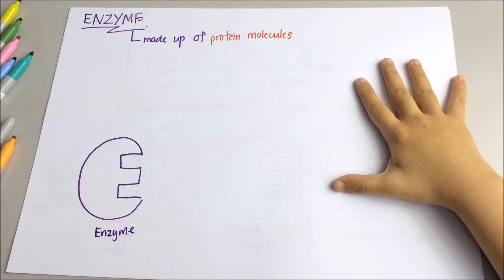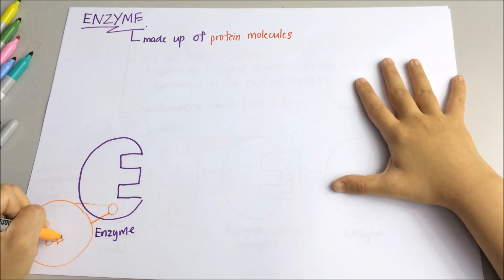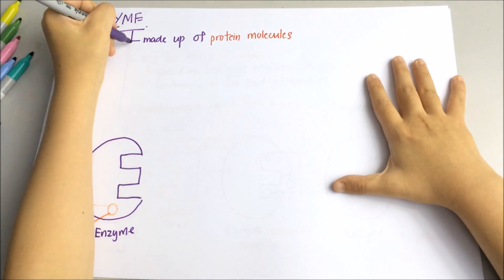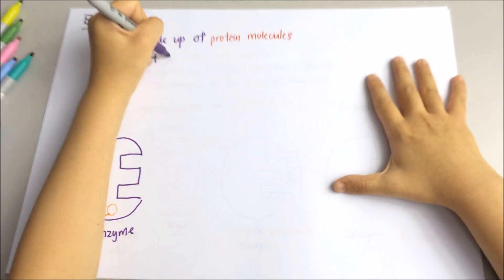If you take a part of the enzyme and have a closer look at it, you'll find that enzymes are actually made up of chains of amino acids that are folded up to form a specific 3D structure.